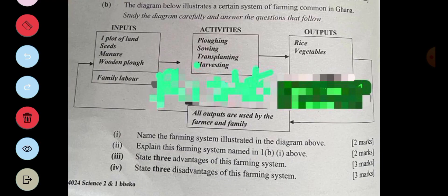The diagram below illustrates a certain system of farming common in Ghana. Study the diagram carefully and answer the questions that follow. So we have inputs, we have activities, we have outputs, and we have another drop down below which says all outputs are used by the farmer and family. With the inputs we have one plot of land, seeds, manure, wooden plow, and family labor. Activities we have plowing, sowing, transplanting, harvesting. Then output we have rice and then vegetables.